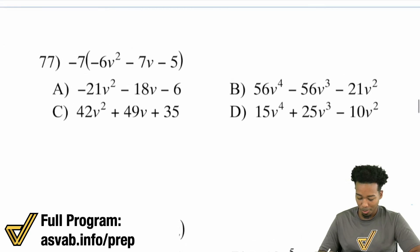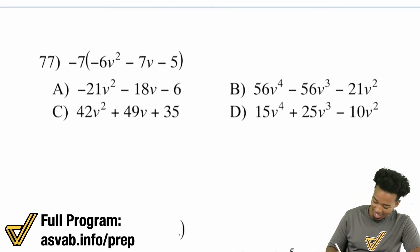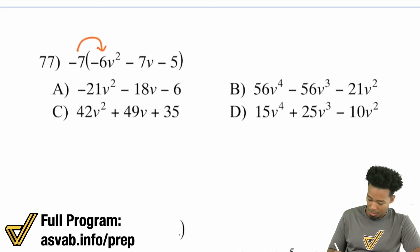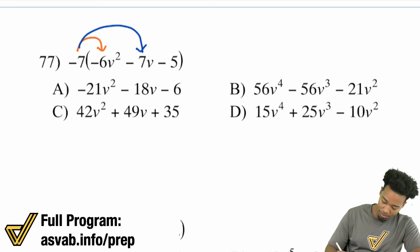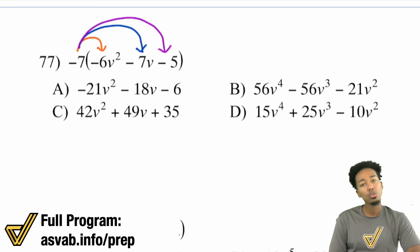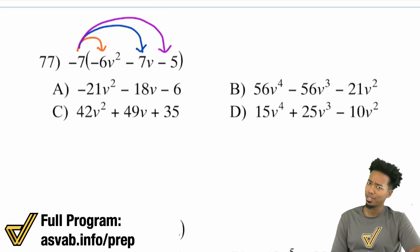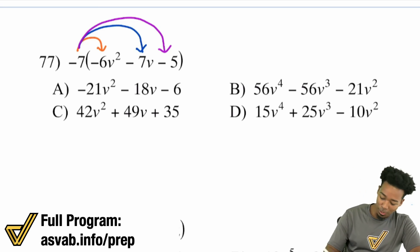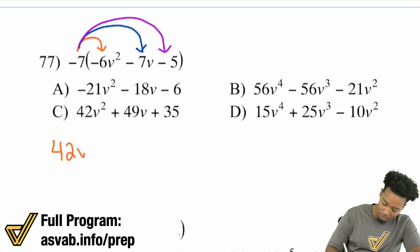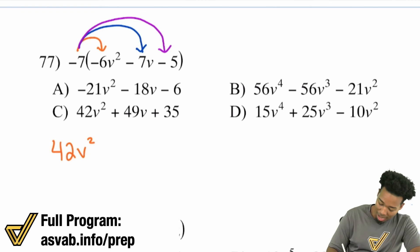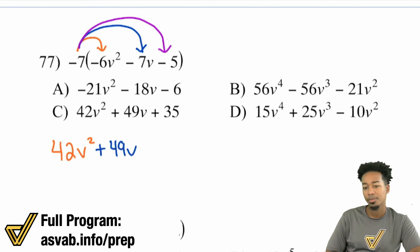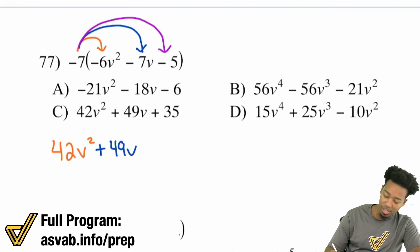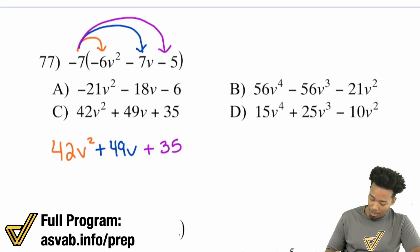Lastly, number 77: we have a negative seven distributed to negative six V squared, negative seven V, and negative five. Negative seven times negative six is positive 42, keep V squared. Negative seven times negative seven is positive 49, keep V. Negative seven times negative five is positive 35. So the answer is 42V squared plus 49V plus 35 — answer choice C.